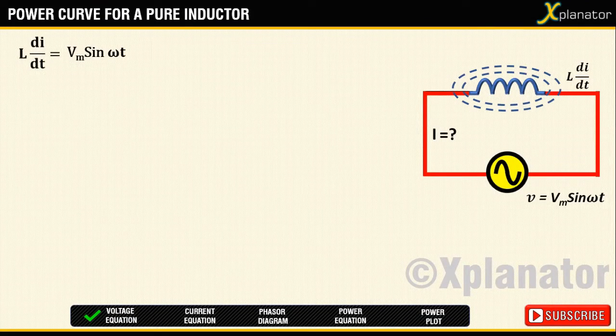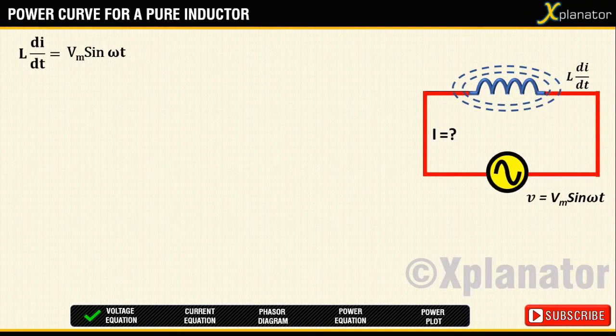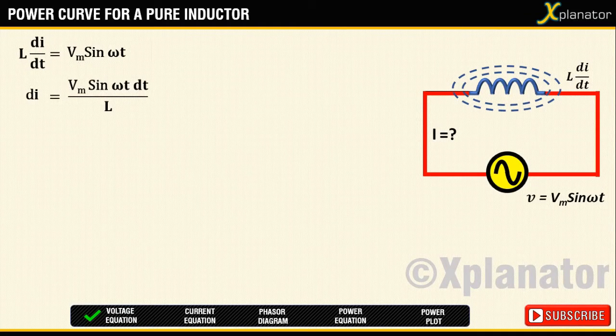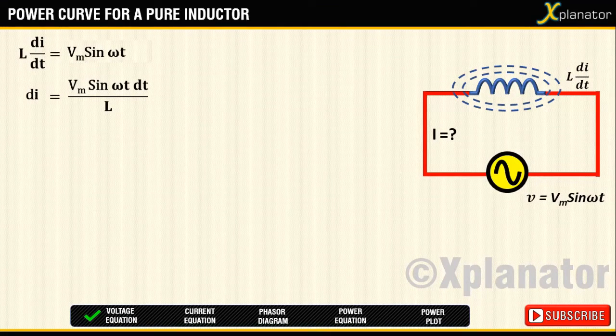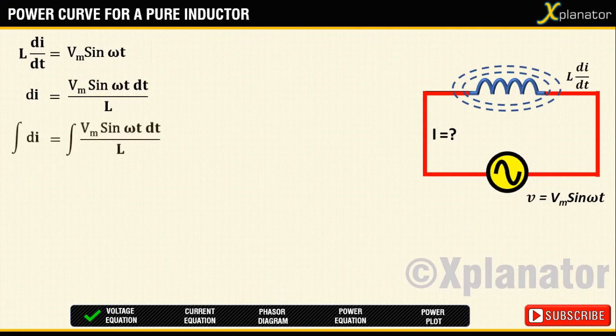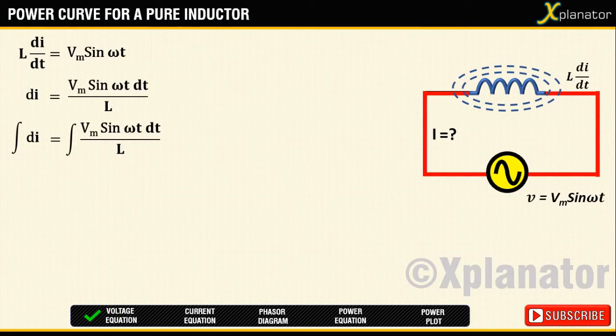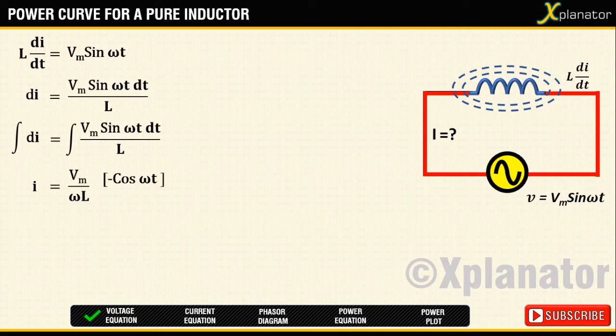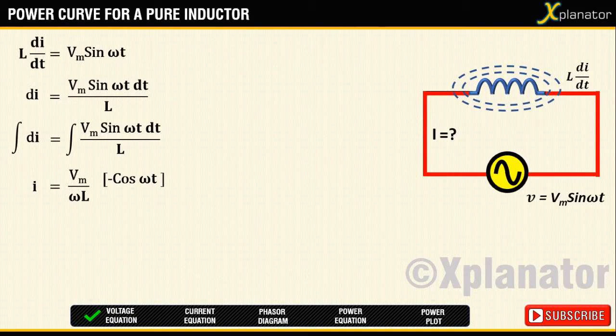Since equation for current I has to be derived, keep the current term on one side and take all the other terms on the other side. As di is present instead of I, take integral on both sides. Since integral of sin is minus cos, the solution for current I will turn out to be Vm by ωL into minus of cos ωt.